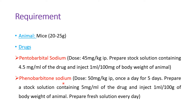Phenobarbital sodium, dose 50 mg per kg intraperitoneally once a day for 5 days. Prepare a stock solution containing 5 mg per ml of the drug and inject 1 ml per 100 grams of the body weight of the animal. Prepare a fresh solution every day because we have to give this particular drug for 5 days.